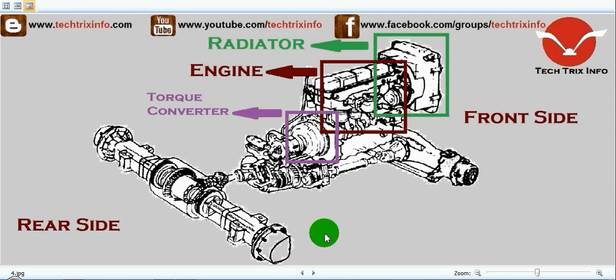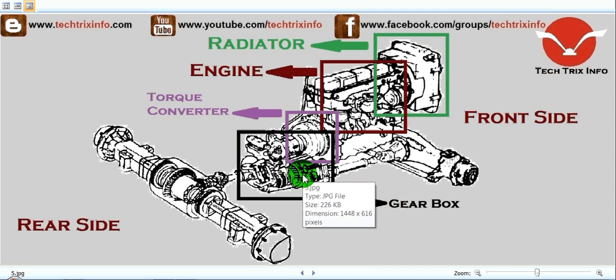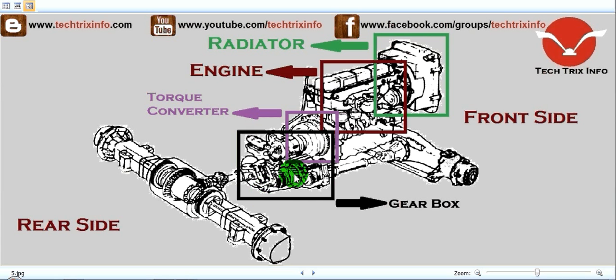After the torque converter we have the gearbox. The drive from the engine is taken up through the torque converter and transmitted towards the gearbox. From the gearbox, the drive is taken outside through the output shaft.